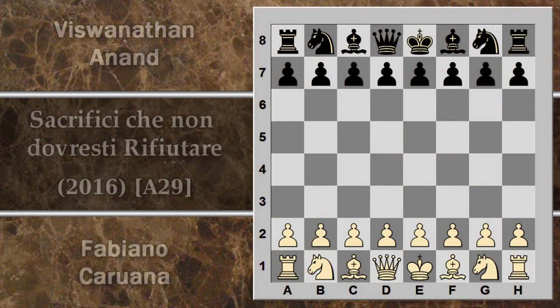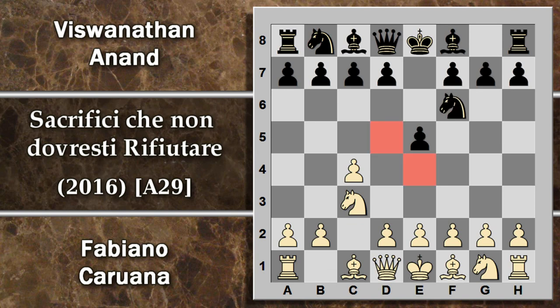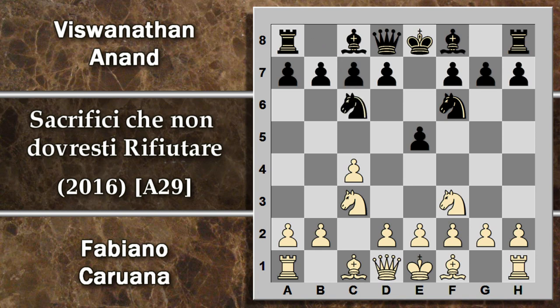In questa partita Caruana gioca con il bianco, Anand con il nero. Si inizia con questa apertura inglese: E5, il nero prova a controllare il centro lasciato per ora vuoto dal pedone del bianco. Cavallo C3, cavallo F6, contrasto su queste case chiare al centro. Cavallo F3 va a minacciare questo pedone e cavallo C6, il nero lo difende. Questa è la partita inglese, variante dei 4 cavalli. Il bianco entra nella sotto-variante di fianchetto con la spinta G3, prevedendo di mettere l'alfiere in questa posizione.